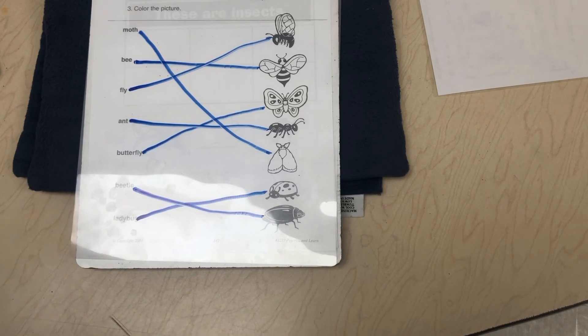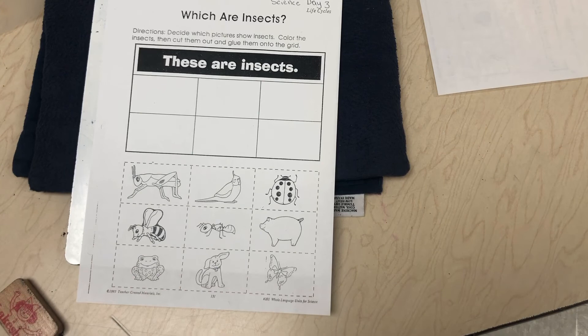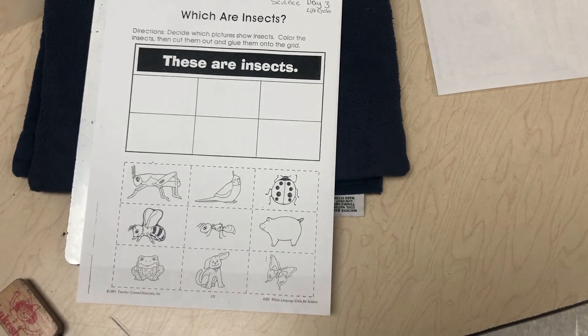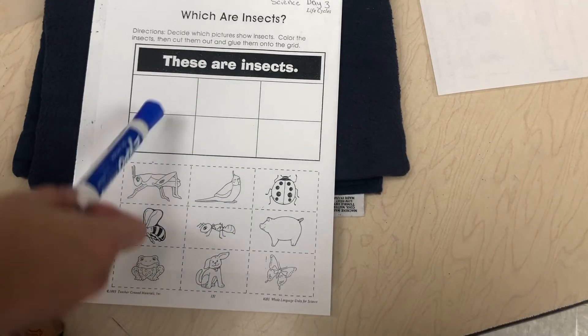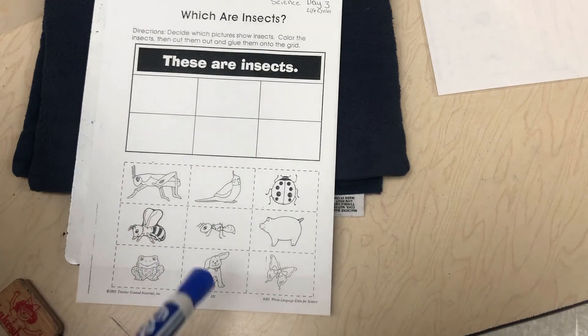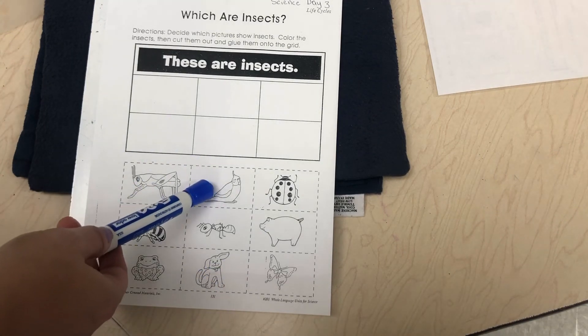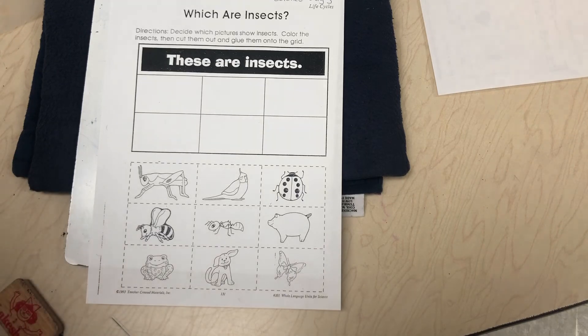This is an additional page you can do with your child. This is called Which Are Insects. The directions say decide which pictures show insects, color the insects, then cut them out and glue them onto the grid. If you do not have access to any of these materials, that is perfectly fine. All you would have to do is circle your insects that you see down here instead of cutting them out. And then your child can draw a picture in these boxes. And you can also just circle it and identify the insects. So you can find the pictures that an insect is not. You can go, is that an insect? And your child could say yes or no or shake their head. And then you could say is that an insect? And they could say yes because a bee is an insect. So this is just an extra page that you can do with your child to kind of engage that insect knowledge and see if they fully understand what an insect is.